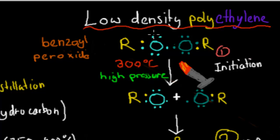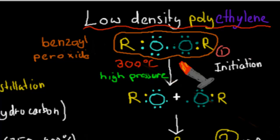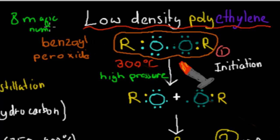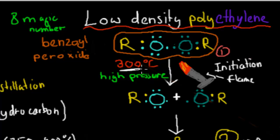First we've got benzoyl peroxide. It has two oxygens, and if you count the electrons, each oxygen has eight electrons — eight is the magic number. All elements want to have eight electrons in their outer shell — that's their mission in life. What we do is put them under high pressure and temperatures of around 300 degrees Celsius. That first step is called the initiation step.